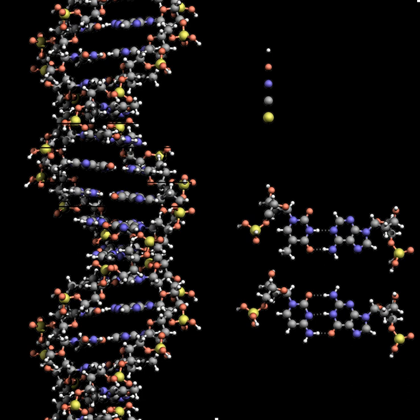Another type of base pairing is Hoogsteen base pairing where two hydrogen bonds form between guanine and cytosine. As hydrogen bonds are not covalent, they can be broken and rejoined relatively easily. The two strands of DNA in a double helix can thus be pulled apart like a zipper, either by a mechanical force or high temperature. As a result of this base pair complementarity, all the information in the double-stranded sequence of a DNA helix is duplicated on each strand, which is vital in DNA replication.